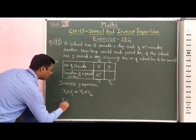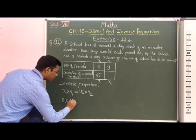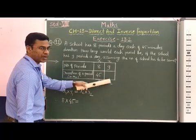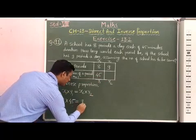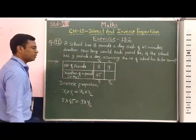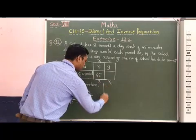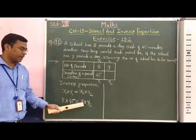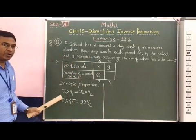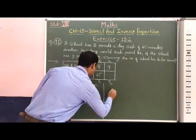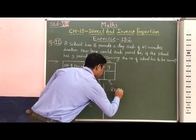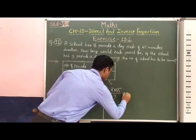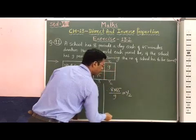8 × 45, which is equal to x2, 9, and we have to find out y2. Therefore 9 × y2 equals 8 × 45. If we shift this 9 from RHS to LHS, then it will divide on LHS.